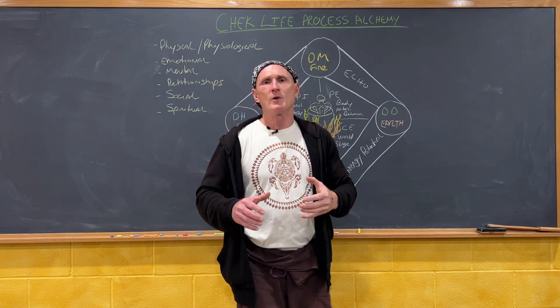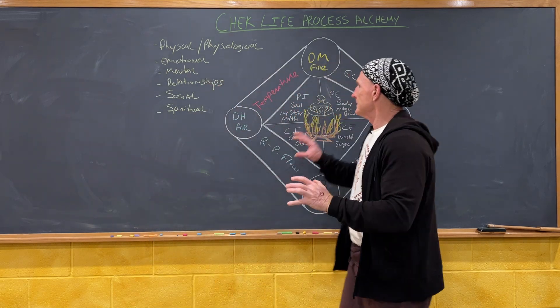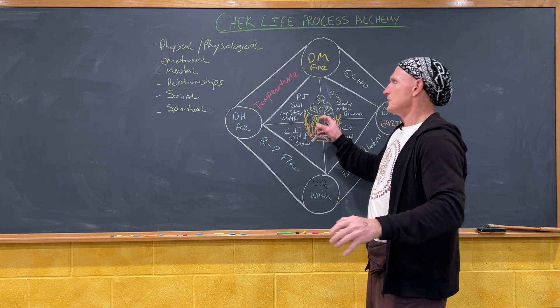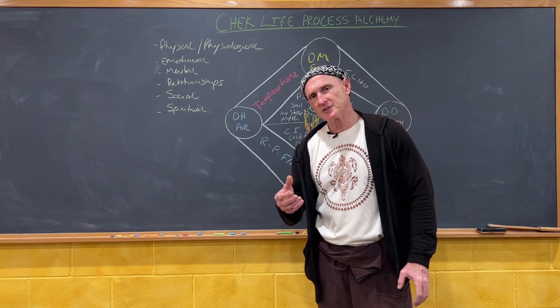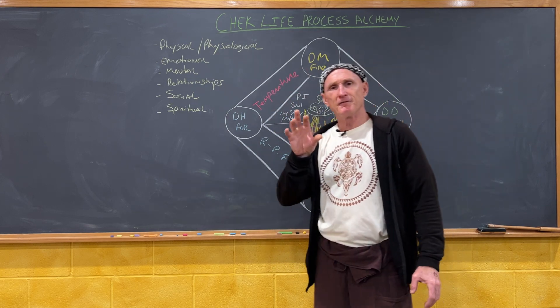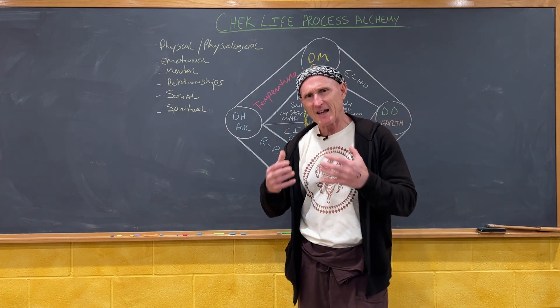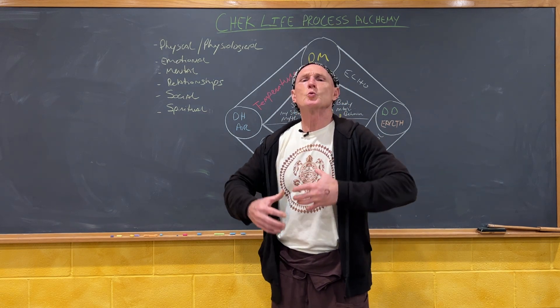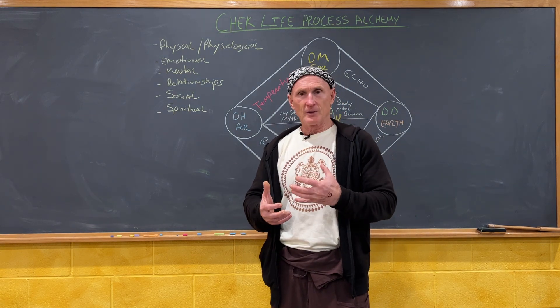But right now, what I wanted you to understand is that this is the model I developed, and that's you in the middle. That's called the artifact of the person. In the middle, we have the four elements here. In the middle, we have the fifth element in alchemy called the quintessence, which is the wisdom you've generated through your life experience.